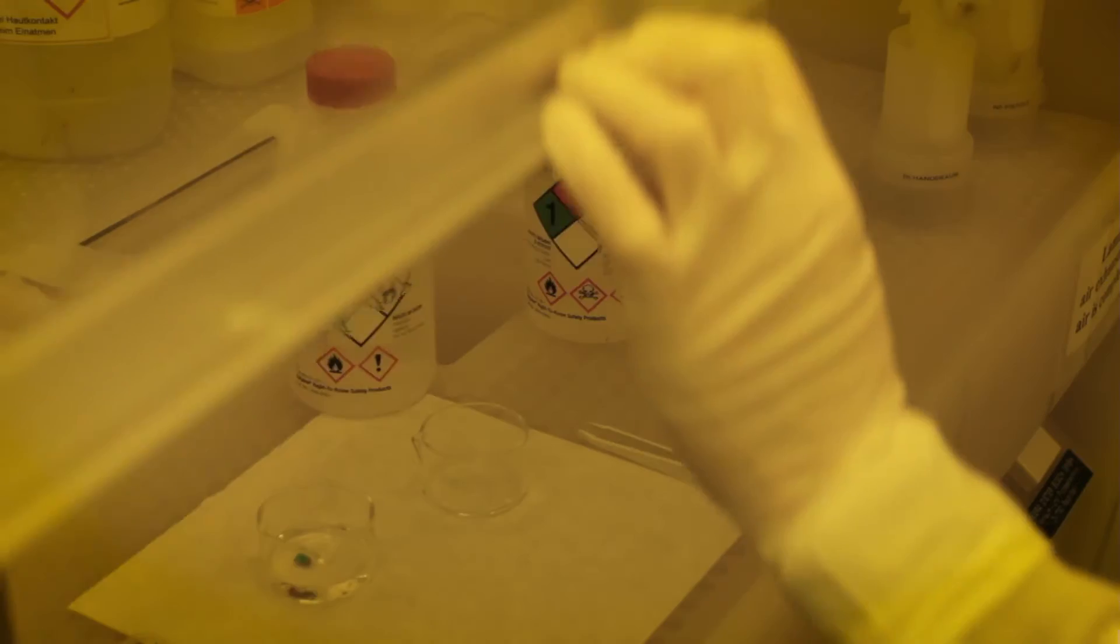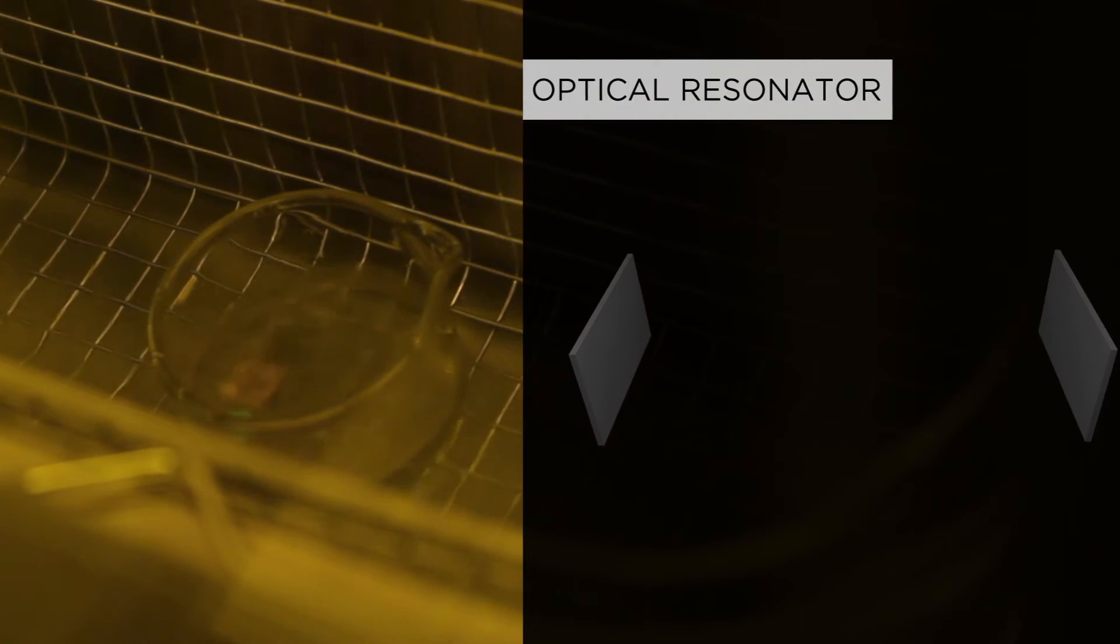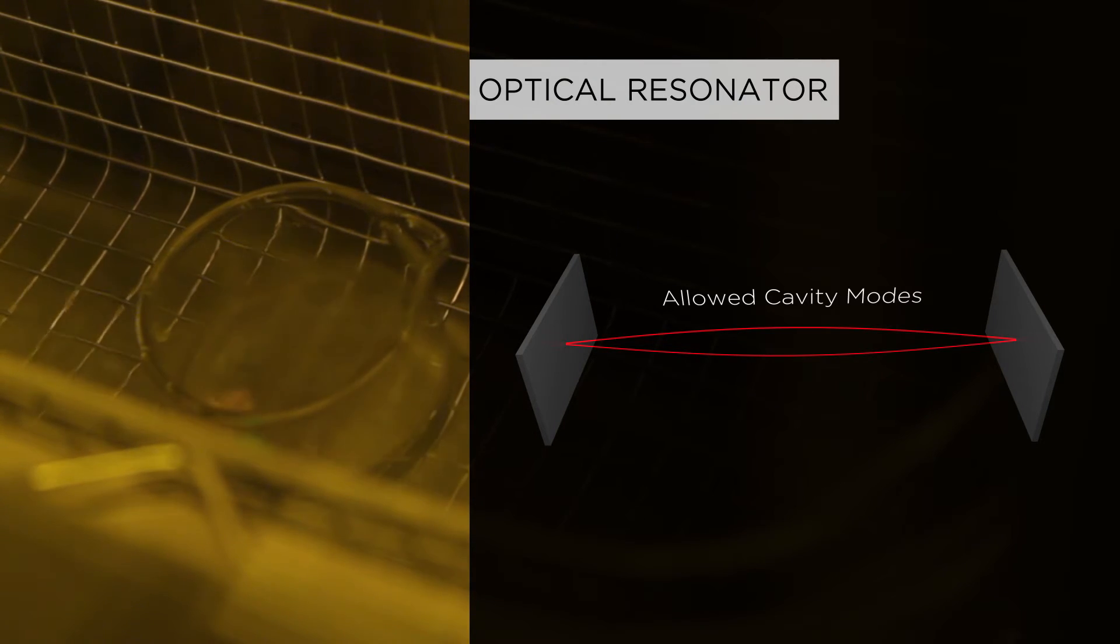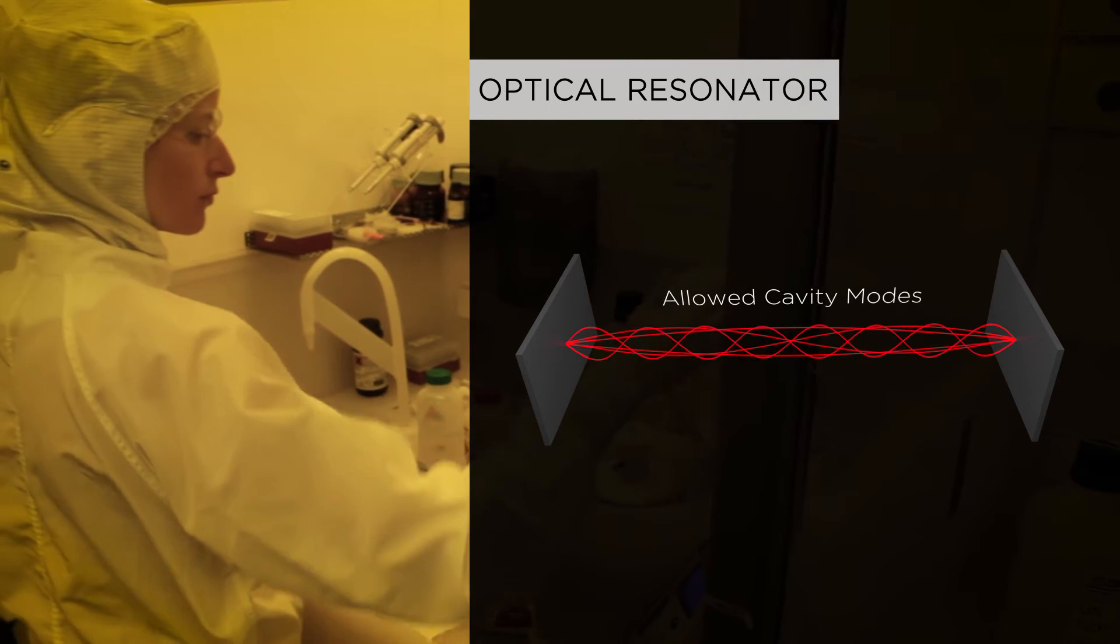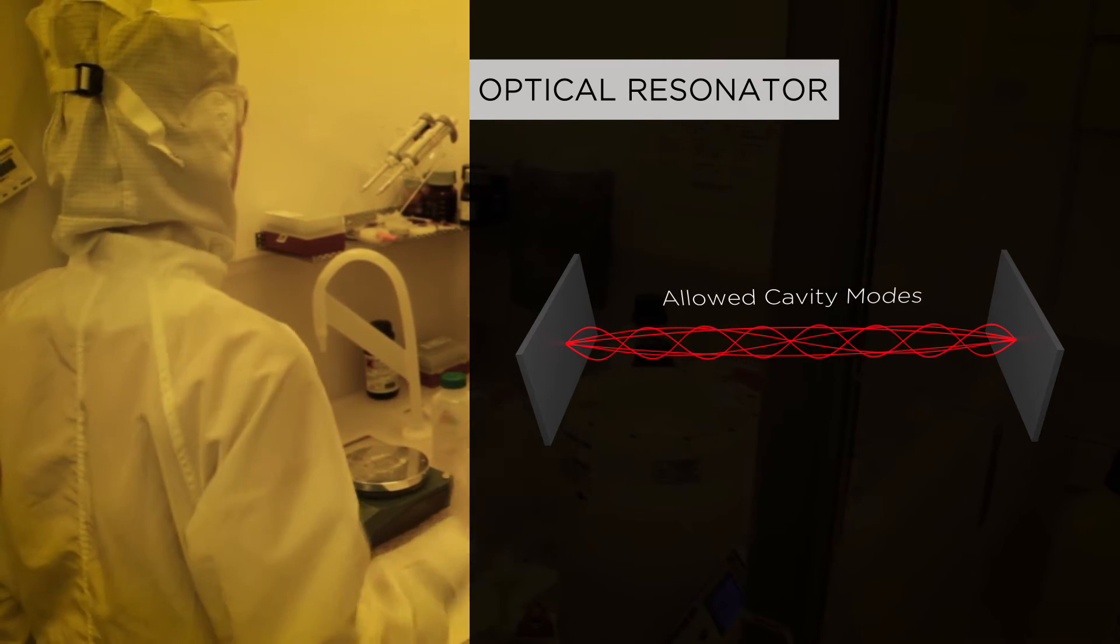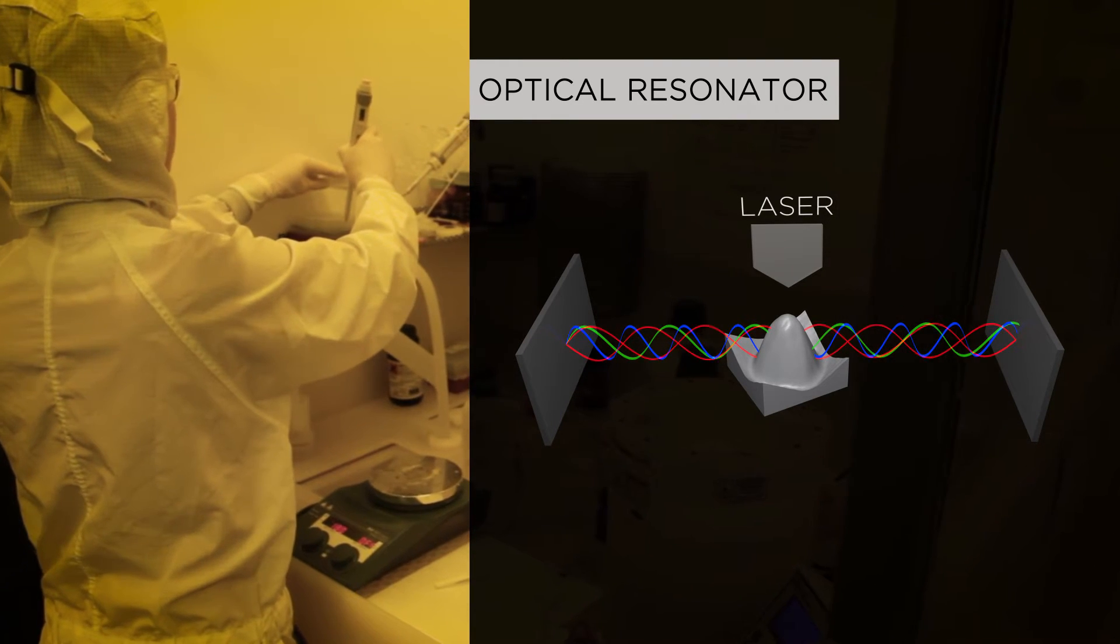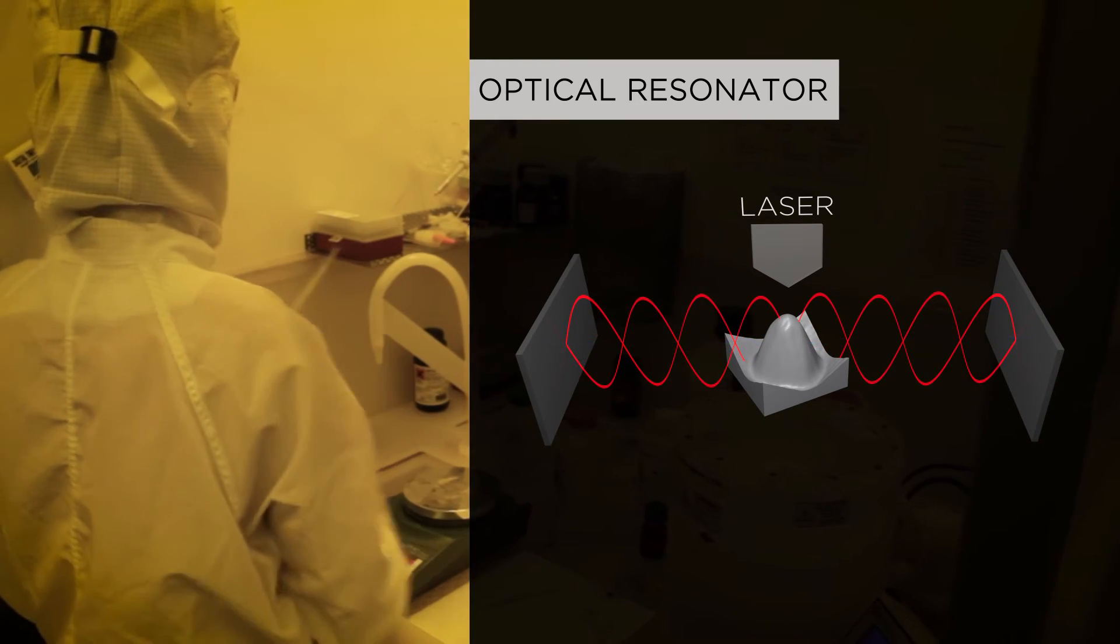One way to significantly enhance the emission properties of such quantum dots is to embed them in optical resonators. Within a resonator, only light waves with distinctive wavelengths, so-called cavity modes, are sustained. As a result, a silicon-germanium quantum dot in the center of such a cavity will show dramatically enhanced emission at wavelengths that match the cavity modes.